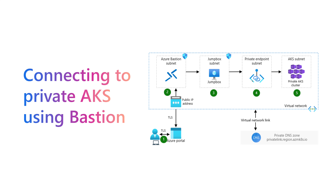For this demonstration we'll use Terraform to create a private AKS cluster using a private endpoint, then create a jump box as an Azure virtual machine, and then use Azure Bastion with a public IP address. All of these resources will live within one single virtual network, and we'll simulate how a user can access Bastion, then the jump box, then the AKS cluster through the private endpoint.